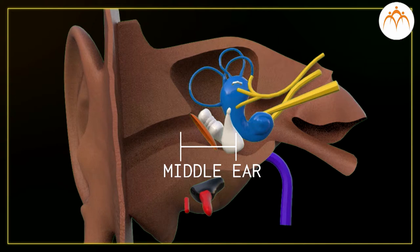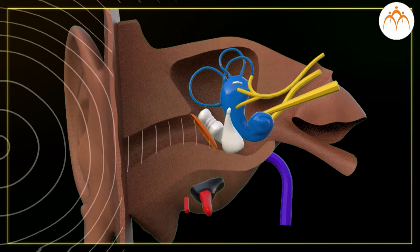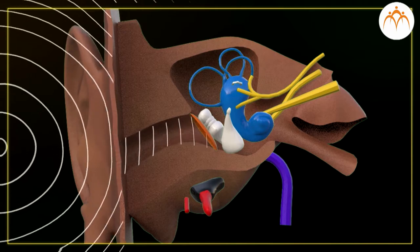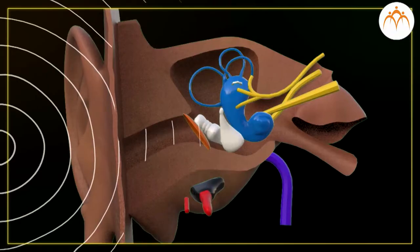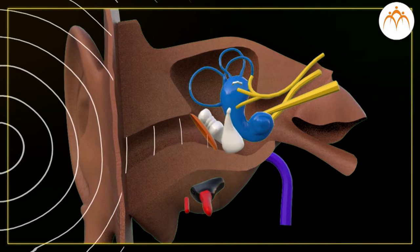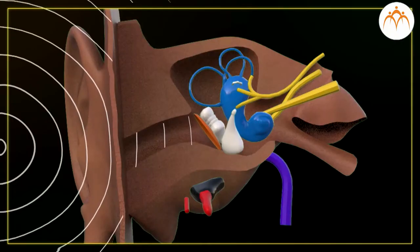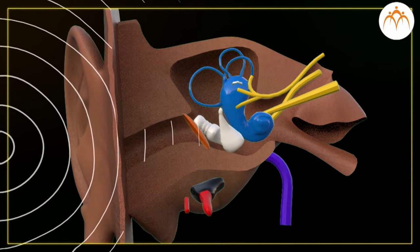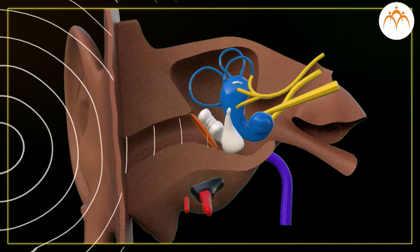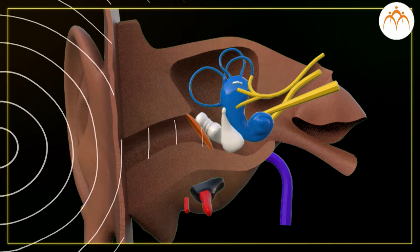Middle ear. There is a thin membrane in the cavity of the middle ear called the eardrum. When a compression in the sound wave reaches the eardrum, the pressure outside it increases and it gets pushed inwards. The opposite happens when a rarefaction reaches there — the pressure outside decreases and the membrane gets pulled outwards. Thus, sound waves cause vibrations of the membrane.